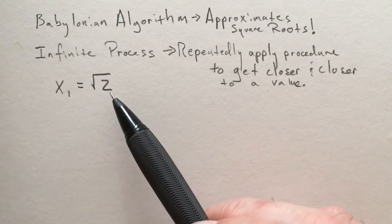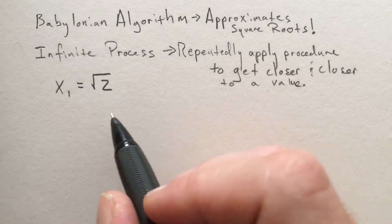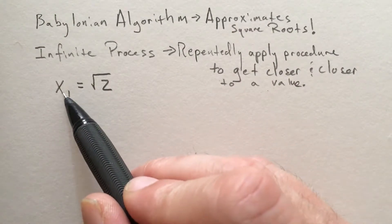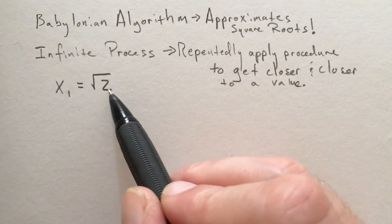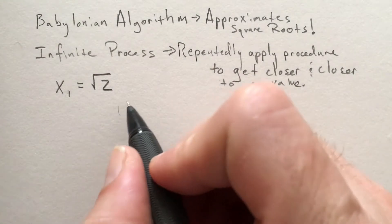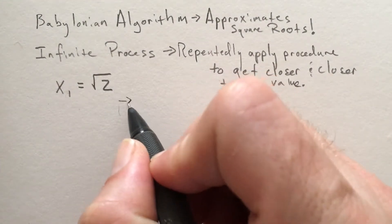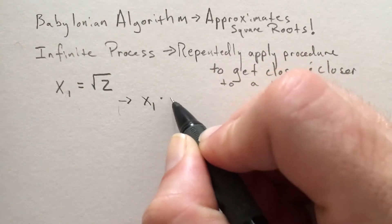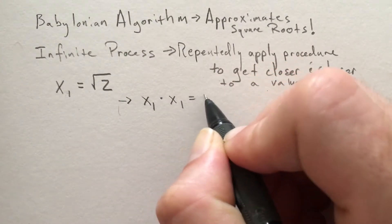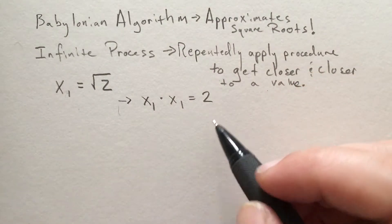To start with, let's consider this statement: we have some number x₁ equal to the square root of 2. From high school, you might remember that if you multiply a square root by itself—for example, the square root of 2 times itself—we will just get what was inside the radical: the 2.